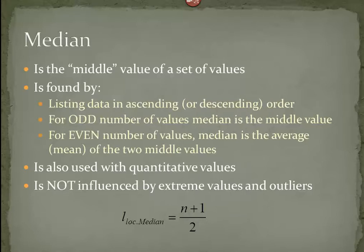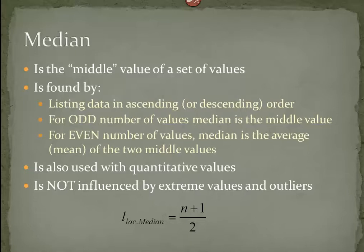If we had three numbers in ascending order, the middle value would obviously be the second value. But if we have 35 or 40 values, how do we find the center? This formula can help: we take n, which represents the number of values, add 1 to it, and then divide by 2. The number we get will be the location of our median when those numbers are in ascending or descending order.